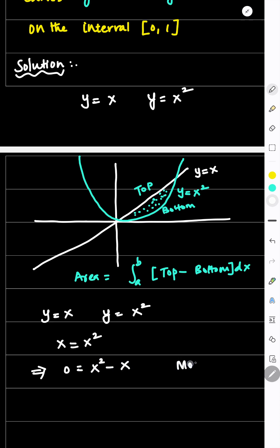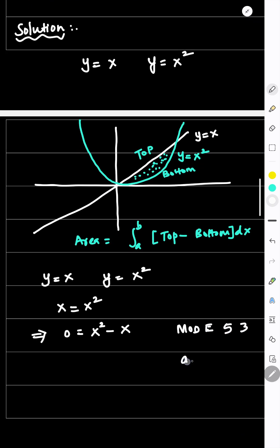Take your calculator, go to mode 5 and then 3. If you press this, you will get a, b, c. a is the coefficient of x square, b is the coefficient minus 1, and c is 0. If you put this in the calculator, you will get x equals 0 and x equals 1.